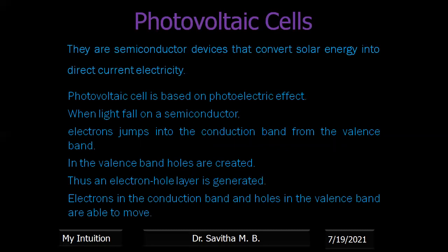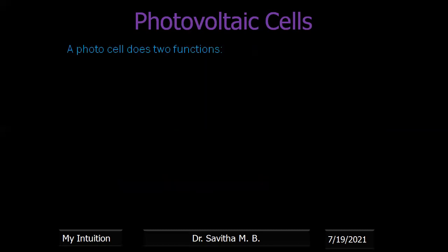This photovoltaic cell is mainly based on the photoelectric effect. That means when light falls on a semiconductor, the electron jumps from the valence band to the conduction band. In the valence band, holes are created, and this electron-hole pair can move — that is responsible for the generation of electricity.